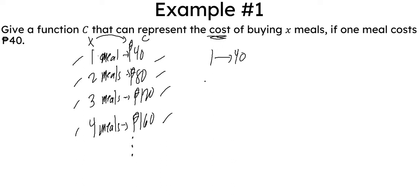But if you would notice, one gets 40, two gets 80, three gets 120, and four gets 160, which would mean that if you will see the pattern, that is actually 1 times 40, 2 times 40, 3 times 40, 4 times 40, and so on.